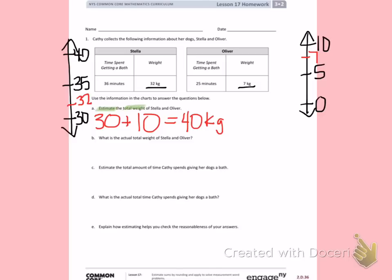Letter B. What is the actual total weight of Stella and Oliver? So this time I'm going to find the actual total weight. That means I'm going to use a standard algorithm. So I am going to add 32 kilograms plus 7 kilograms. 2 plus 7 is 9. 3 plus an imaginary 0 is 3. So their total weight is 39 kilograms.